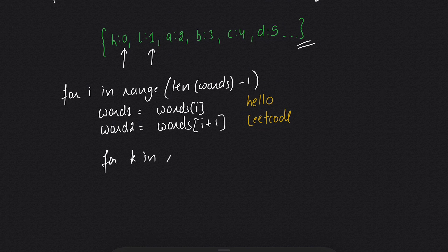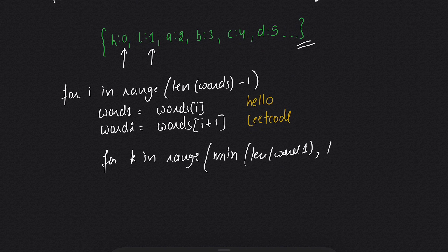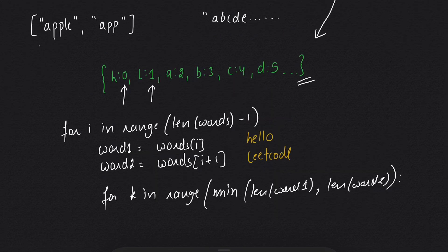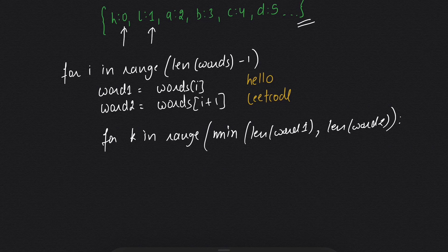We will take another loop: `for k in range(min(len(word1), len(word2)))`. We do this so we don't go out of range, because as seen in example three, word1 could be shorter than word2 or vice versa. So we iterate up to the length of the smaller word.